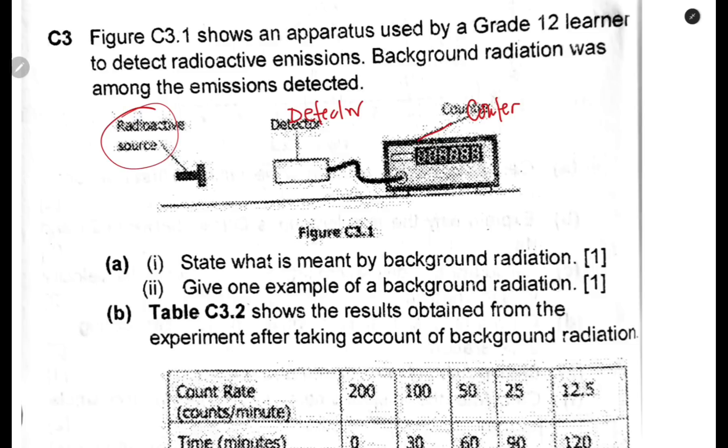The first question is: what is meant by background radiation? You need to know how to define background radiation. Background radiation is a small amount of radiation present at all times on earth. Then give one example of background radiation.